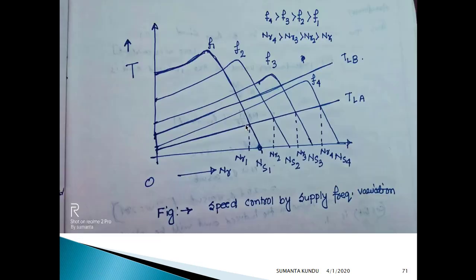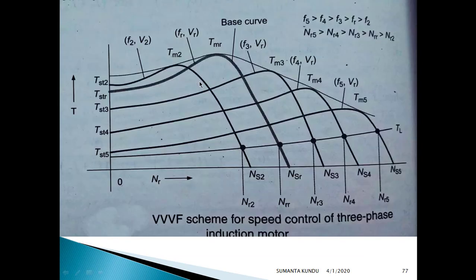This is shown in the curve — as frequency reduces, maximum torque also reduces. A similar thing happens when frequency increases above base speed: since V/F ratio is no longer constant and is reducing, the torque is proportional to this ratio. So as V/F decreases, starting torque, developed torque, and maximum torque all reduce. This is all about the VVVF scheme of speed control of the three-phase induction motor.